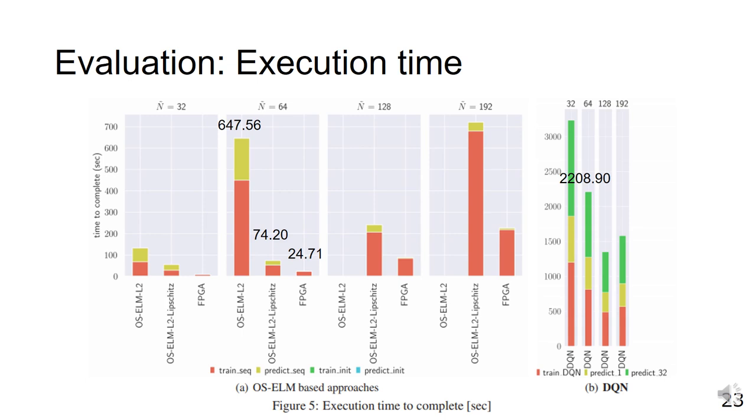In DQN, trainDQN is the learning, and predict1 and predict32 correspond to the prediction when the batch size is 1 and 32 respectively.